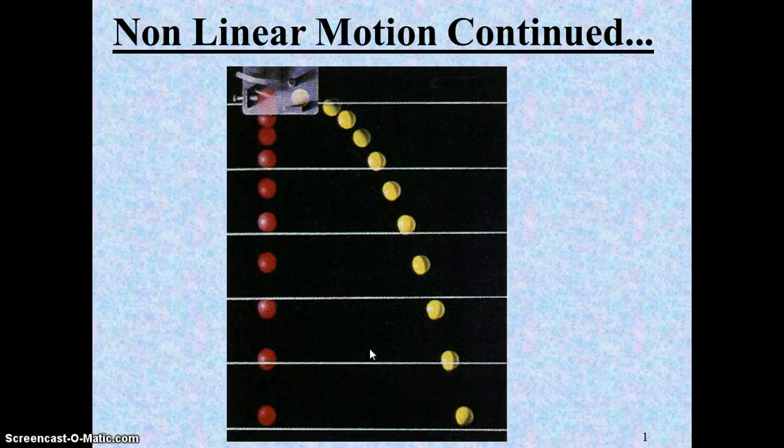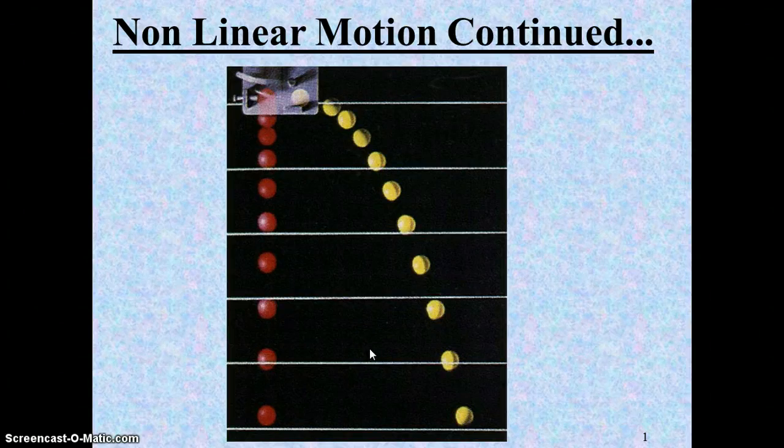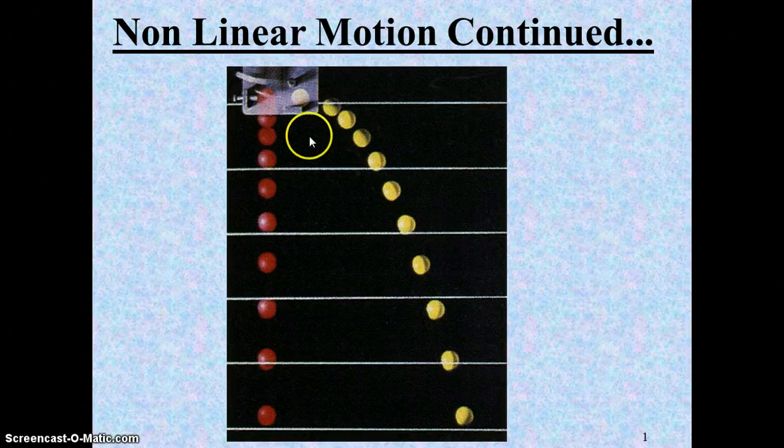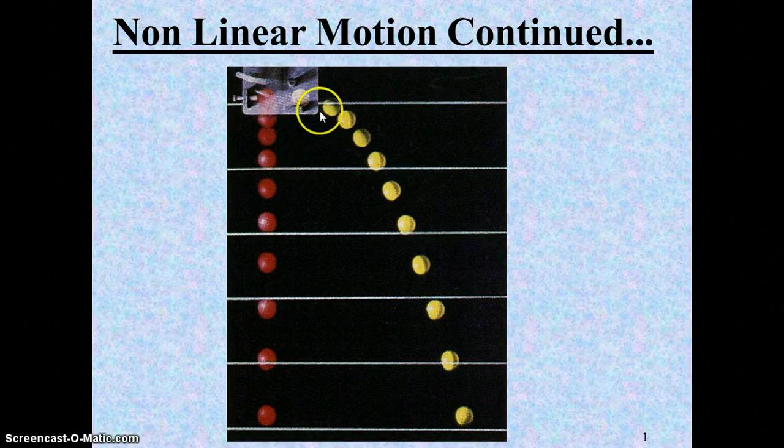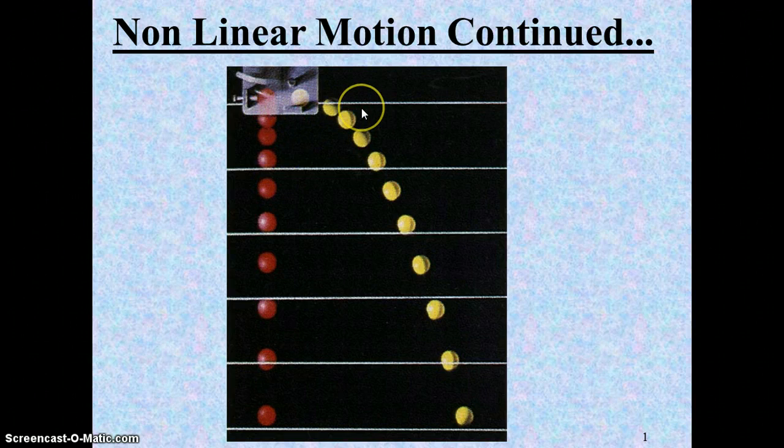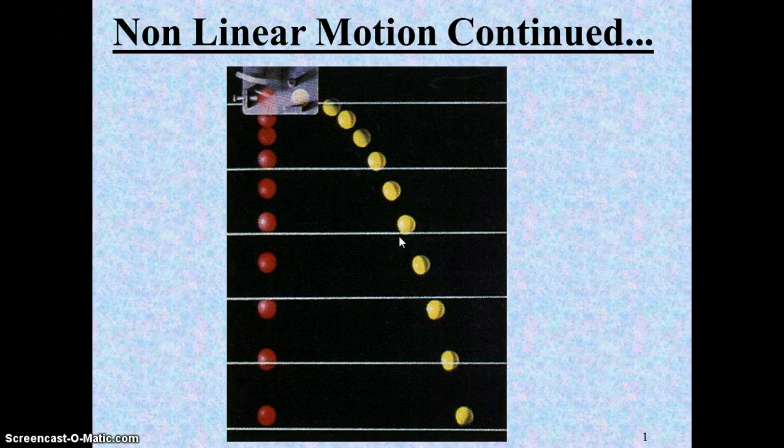This is a continuation of the projectile motion notes from Monday. In this picture, you can see object dropped versus object launched horizontally forward. They have the same vertical motion, hit the ground at the same time. Only difference is the yellow one is moving forward.